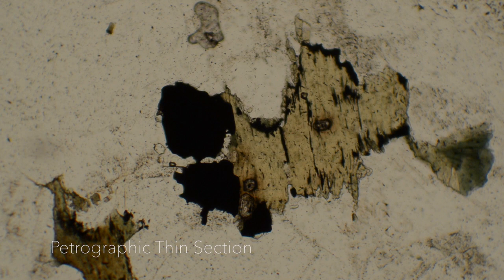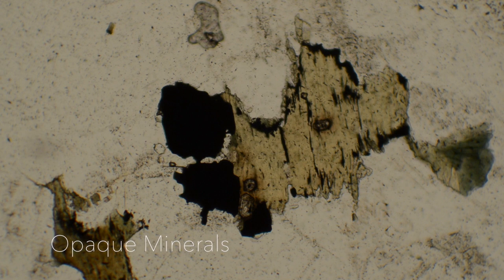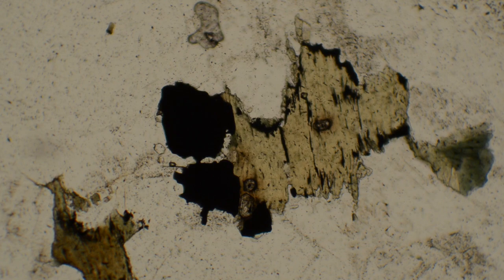This is an example of a petrographic thin section. Some distinct grains do not let light pass through. These are known as opaque minerals, and we cannot characterize them further on this type of microscope. The surrounding minerals that allow light to pass through are transparent.